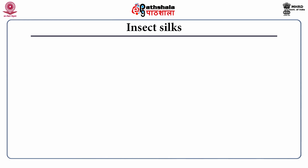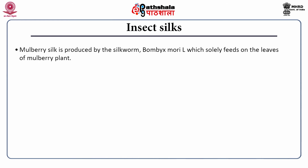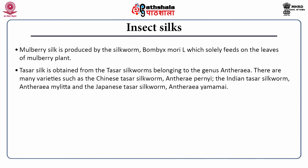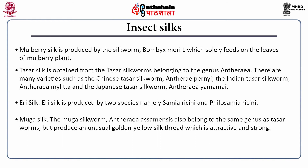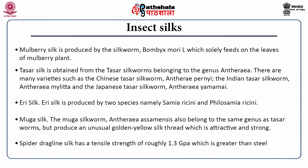The second important benefit from insects is insect silks. Mulberry silk is produced by the silkworm Bombyx mori, which solely feeds on mulberry plant leaves. Tassar silk is obtained from Tassar silkworms belonging to the genus Antheraea, including Chinese Tassar silkworm Antheraea pernyi, Indian Tassar silkworm Antheraea mylitta and Japanese Tassar silkworm Antheraea yamamai. Eri silk is produced by two species, Samia ricini and Philosamia ricini. Muga silk extracted from Antheraea assamensis produces an unusual golden-yellow silk thread. Spider dragline silk has a tensile strength of roughly 1.3 gigapascals, which is greater than steel.